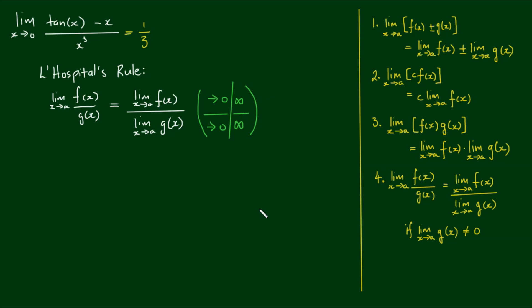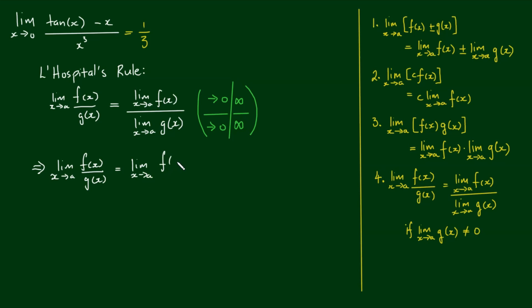So if we have a case where both the top and bottom limits go to either 0 or infinity, then L'Hôpital's rule states that the limit as x approaches a of f(x) over g(x) is equal to the limit as x approaches a of the derivative of f(x) over the derivative of g(x).